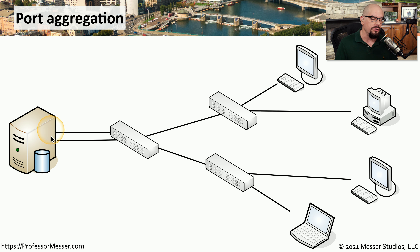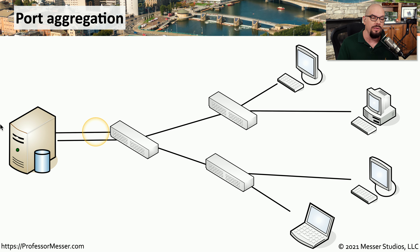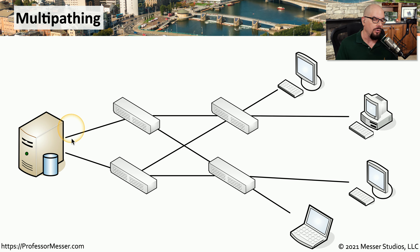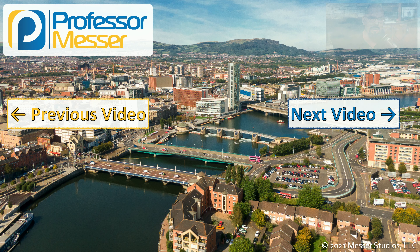With multiple network interface cards in a server, you have a number of different implementations for high availability. You could use port aggregation, where you have multiple links to a single switch — instead of a single 1 gig connection, you could have two separate links and use all 2 gig of that connection, effectively doubling the bandwidth to and from the server. This still provides high availability because if you lose one of these connections, the other interface is available. You could take this a step further with multi-pathing, where you have multiple network interface cards in the server but each NIC connects to its own switch, so that if the entire switch was to fail, you would still have connectivity to the rest of the network.